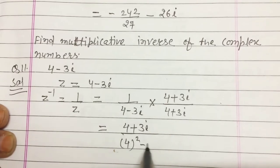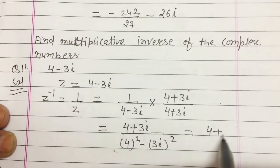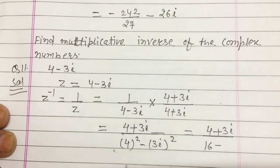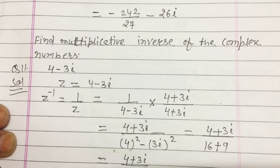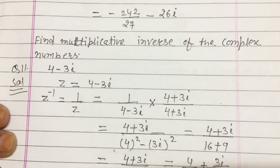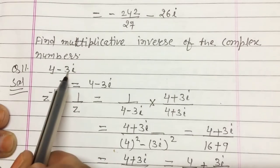So the numerator is (4 + 3i), and the denominator is 4² minus (3i)²: that is 16, and 3² = 9, and i² = −1, so minus minus gives plus, giving 16 + 9 = 25. Therefore the answer is (4 + 3i)/25, or written as 4/25 + 3i/25. This is the multiplicative inverse of the given complex number.